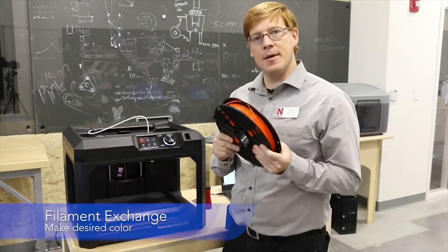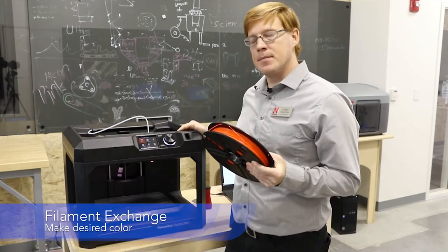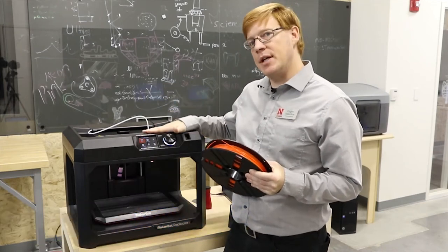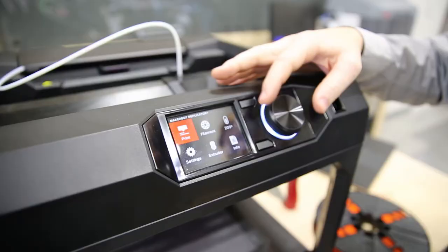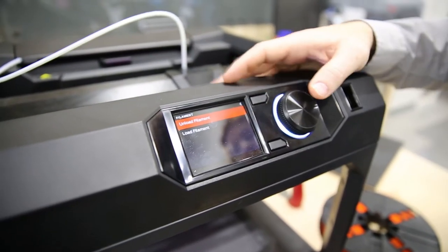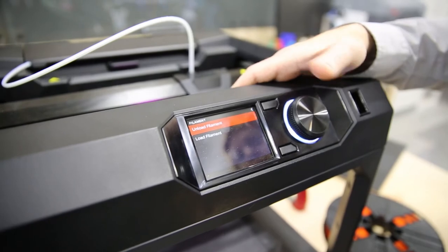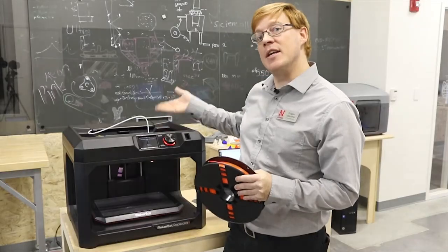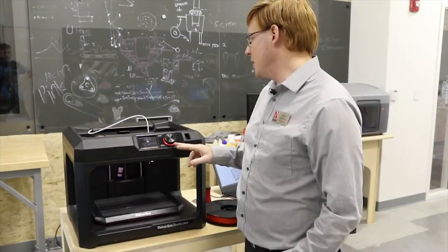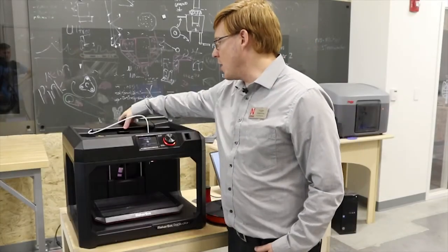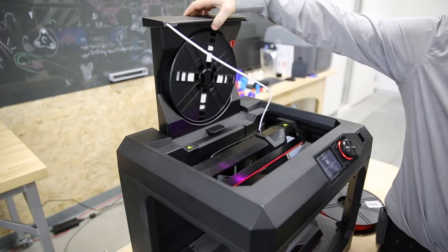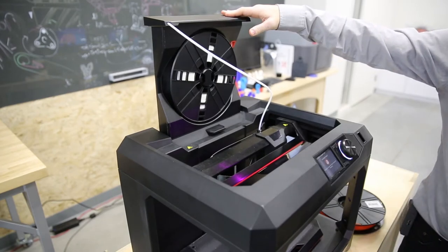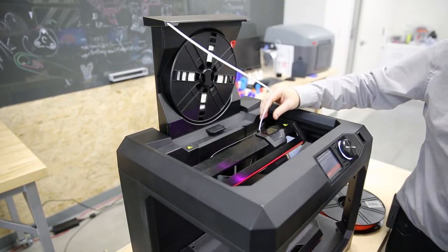We'll start by changing the filament for the MakerBot. To do that, we're going to use the on-screen controls. I'm going to go to filament and unload filament, selecting that. Now it's going to go through its process to heat up the extruder and eject the filament. So it's just ejecting the material. I'm going to lift up the material tray and it says unloading is complete.